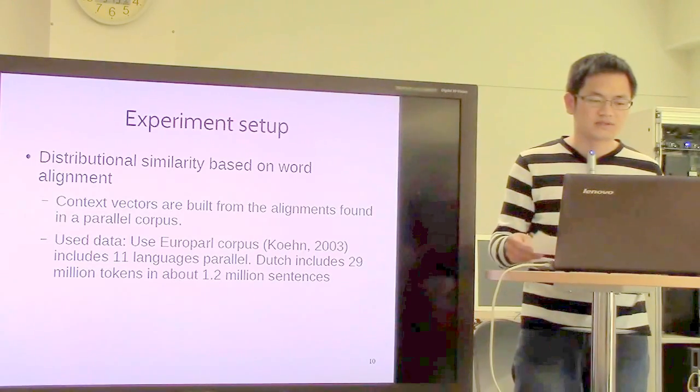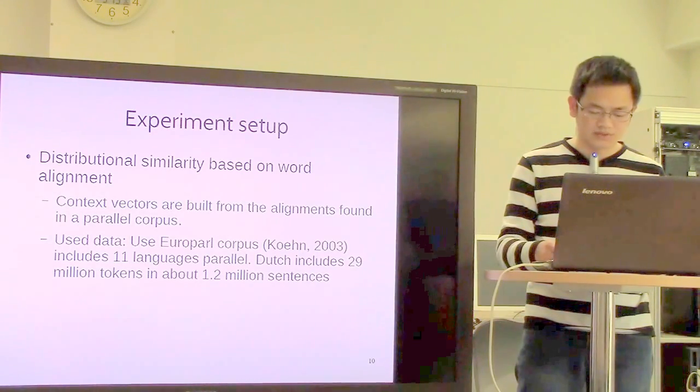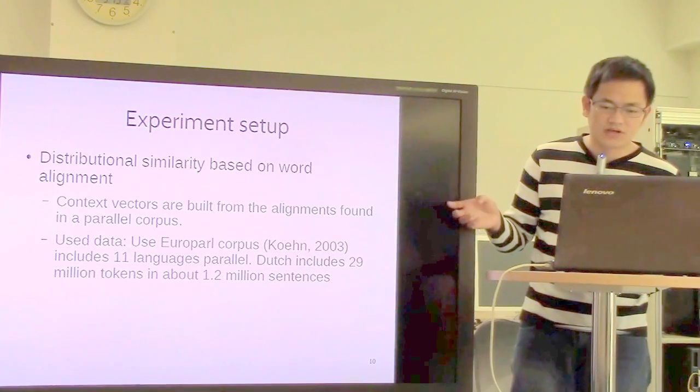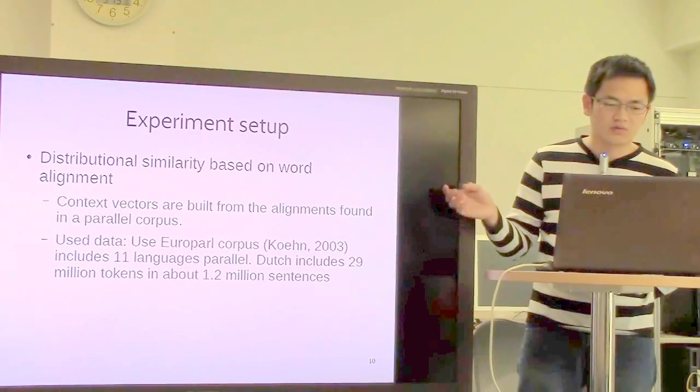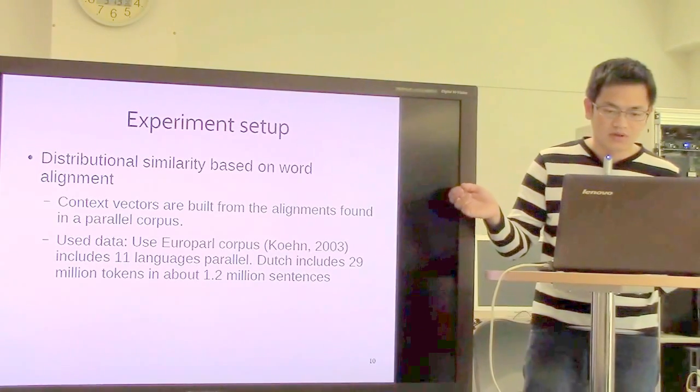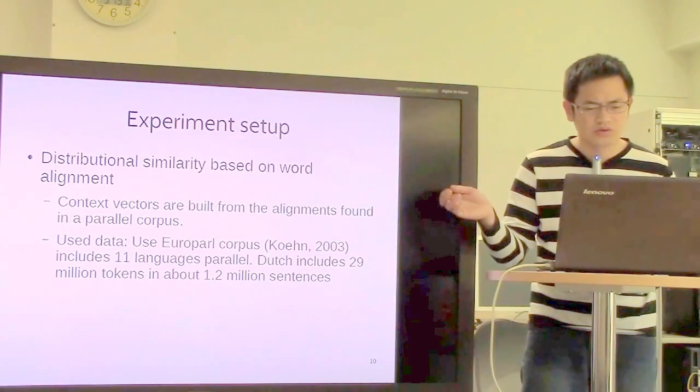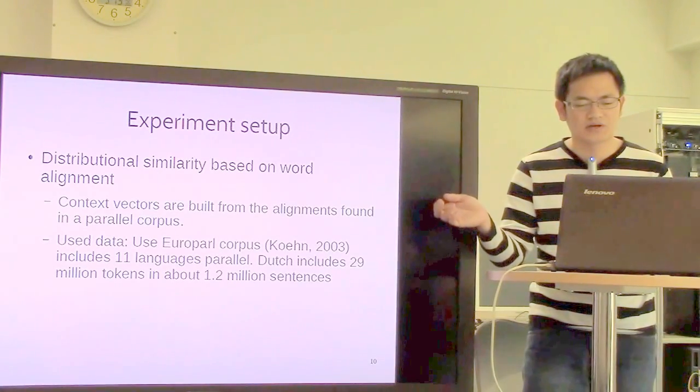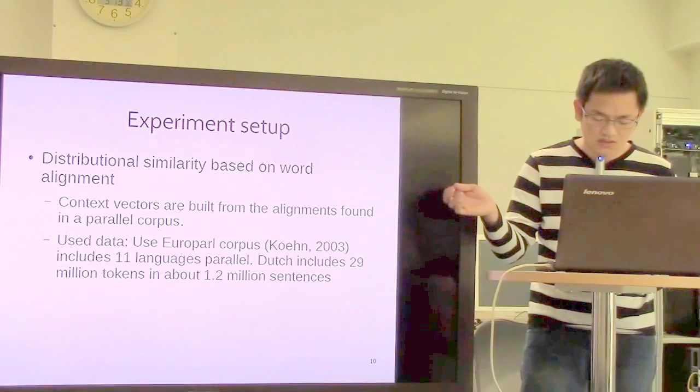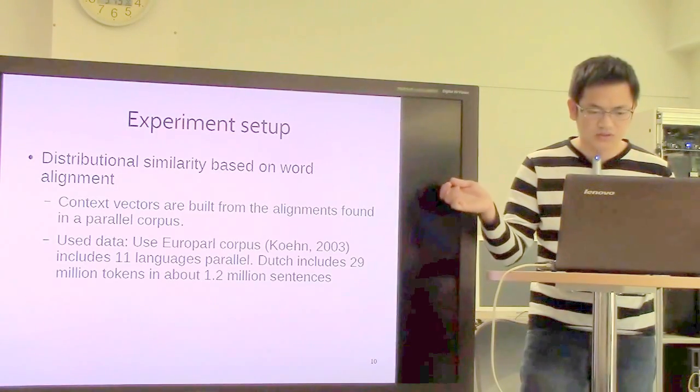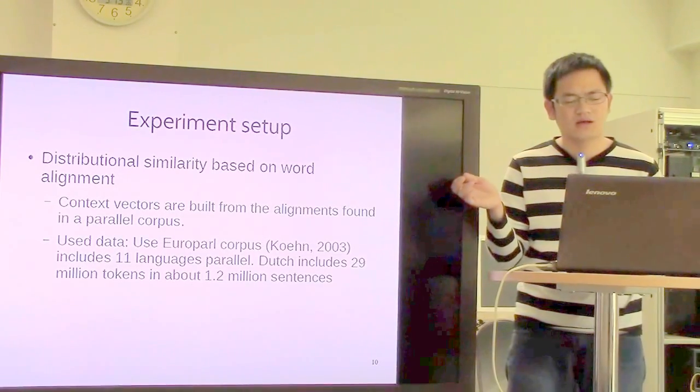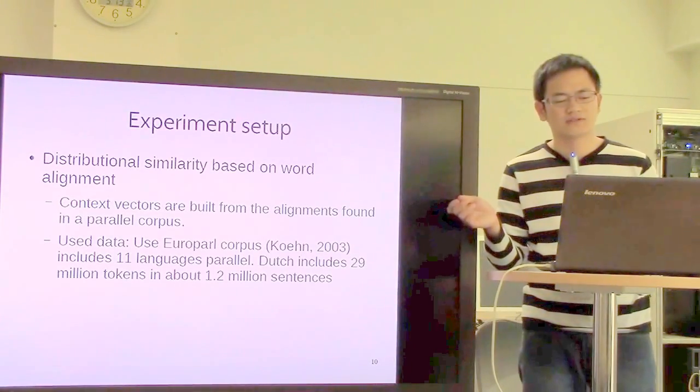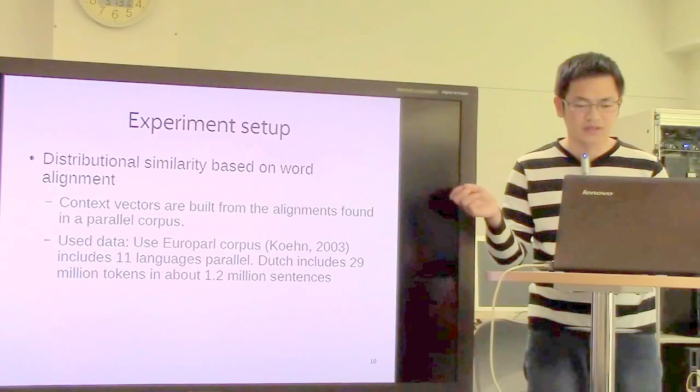Next is distributional similarity based on word alignment. The context vectors were derived from alignments found in parallel corpus. They use the Europarl corpus, including eleven language parallels with Dutch—29 million tokens in about 1.2 million sentences.